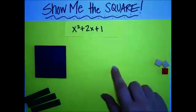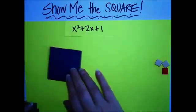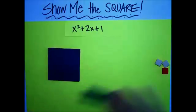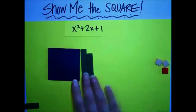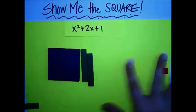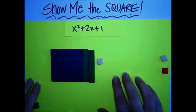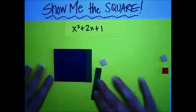X squared plus 2x plus 1. We've got an x squared tile here, 2x's and 1 unit. Not a perfect square in this configuration. Let's move it around and see what we can get.